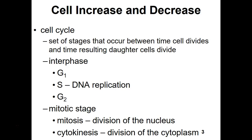On page 80, we look at the cell cycle. The cell cycle is a set of stages that produce new cells. We start with one cell, that cell divides, and we produce two cells. Those cells then start their own cell cycle — the parent cell divides, producing daughter cells. For somatic cell division, we're talking about a process called mitosis. In the cell cycle for somatic cells, we go through interphase and then mitosis.